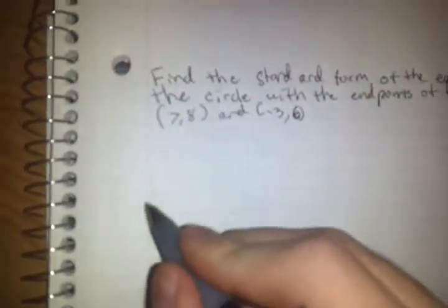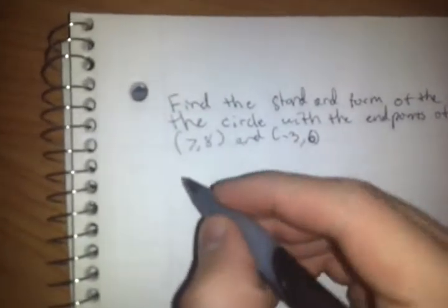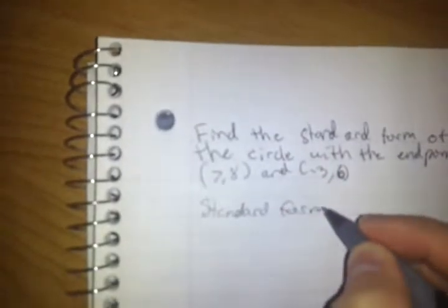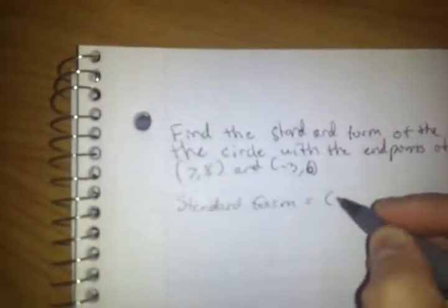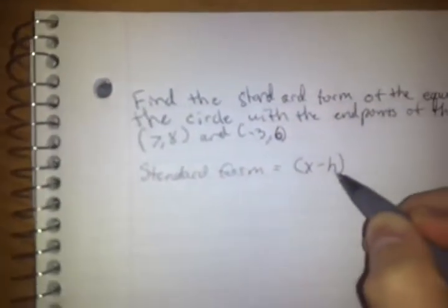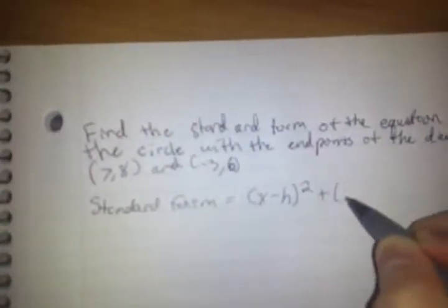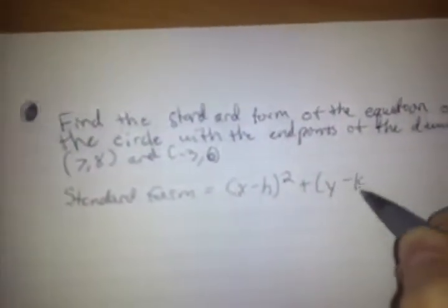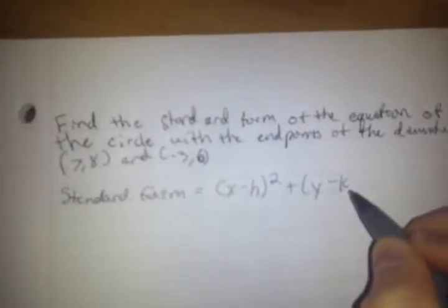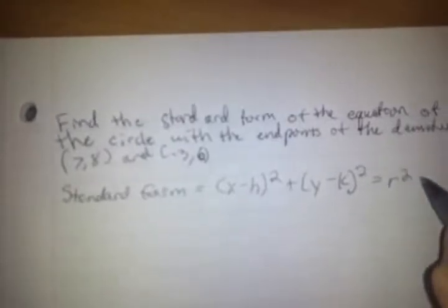First thing to remember is how the standard form looks. Your standard form is (x - h)² + (y - k)² = r², where h is your x value from your center point, k is your y value from your center, and r is radius.